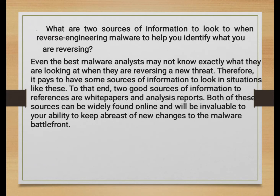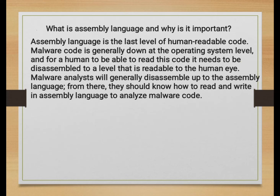What are two sources of information to look to when reverse engineering malware to help identify what you are reversing? Even the best malware analyst may not know exactly what they are looking at when reversing a new threat. Therefore it pays to have sources of information for situations like this. Two good sources are white papers and analysis reports. Both can be widely found online and will be invaluable to your ability to keep abreast of new changes on the malware battlefront.